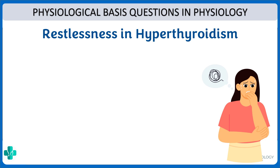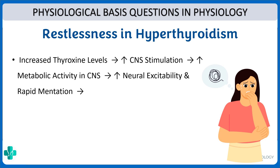Why do we have restlessness in hyperthyroidism? Again it is due to the effect of thyroid hormone on the central nervous system. With increased thyroxine levels there would be increased CNS stimulation, increased metabolic activity in the CNS, increased neural excitability and rapid mentation, which would cause increased irritability and restlessness — that is why we have restlessness or anxiety in hyperthyroidism.